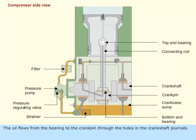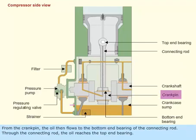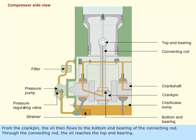The oil flows from the bearing to the crank pin through the holes in the crankshaft journals. From the crank pin, the oil then flows to the bottom end bearing of the connecting rod. Through the connecting rod, the oil reaches the top end bearing.